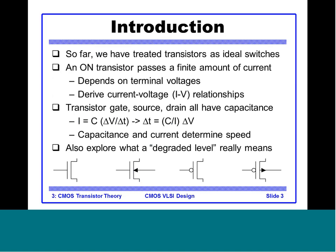We will see how this current depends on the voltage and on various parameters related to the MOS. The transistor gate, source, and drain all exhibit some amount of capacitance with respect to ground. Since I = C·dV/dt, we rearrange the equation to calculate the time in terms of C and I and variation with voltage. The constants C and I actually determine the speed of the gate. The effect of a changing input can be described by ΔV, and takes some finite amount of time to be translated into the output.